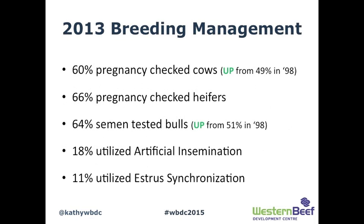On the breeding management side, about 60% of producers pregnancy-checked some or all of their cows, which is an improvement from just under 50% in 1998. 66% pregnancy-checked some or all of their heifers. 64% semen-tested their bulls, up from 51% in 1998. 18% utilized artificial insemination, and 11% used estrous synchronization.